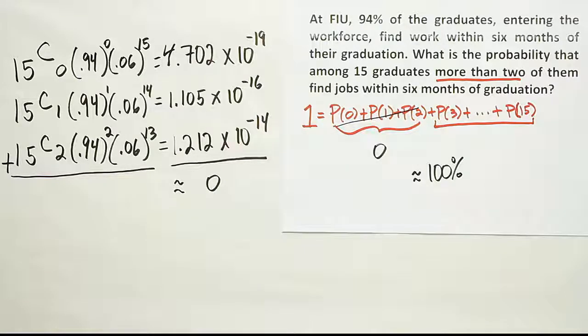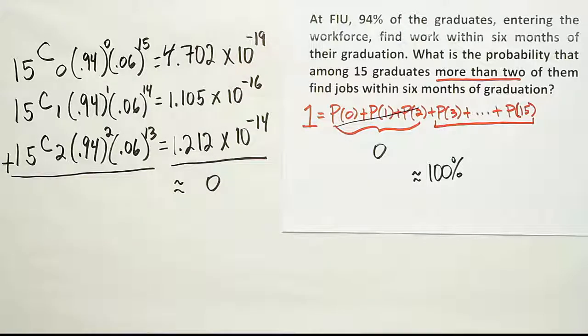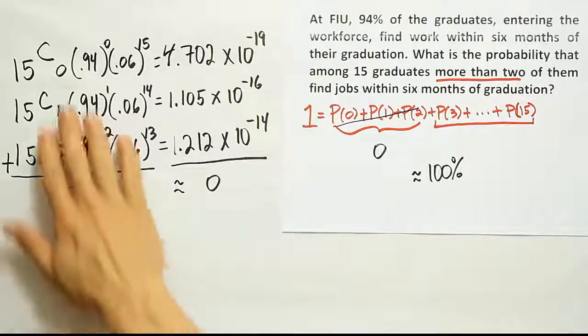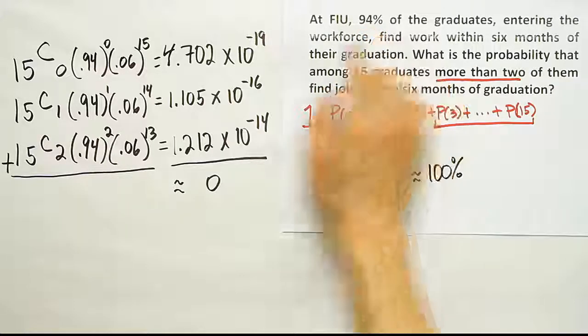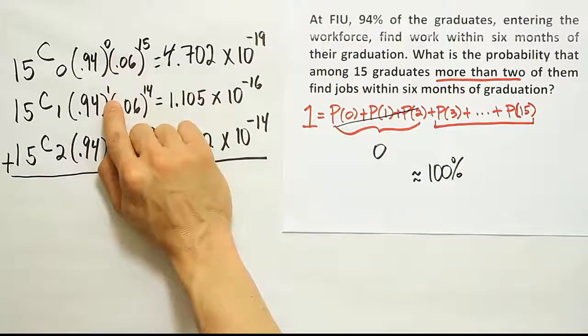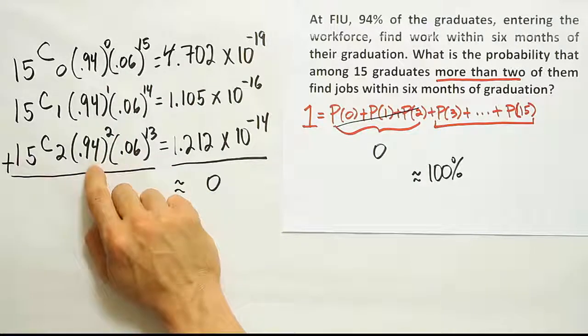And that means the overall probability, then, that it's something from 3 to 15 people who get jobs, that's going to be about 100%. So the interesting problem, I just wanted to show in this example, that sometimes something is virtually impossible. Which should make sense, right? Because 94% of the graduates are going to find jobs within six months. And here we're showing that none of the 15 find jobs, only one or only two. That doesn't make sense if 94% are supposed to find jobs typically.